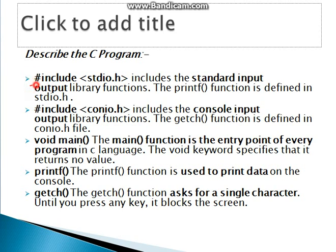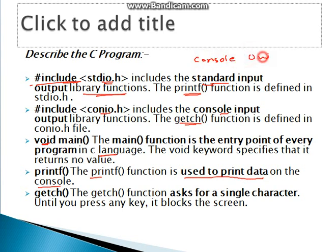stdio.h is the standard input/output library where the printf function is defined. conio.h is the console input/output library where the getch function is defined. When in the previous program we had printf as well as getch functions in void main — main function is nothing but the entry point of every C language program. printf function is used to print data on the console, which is nothing but the output screen seen in C language.